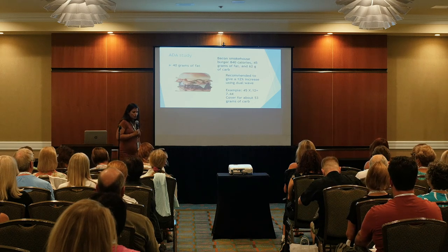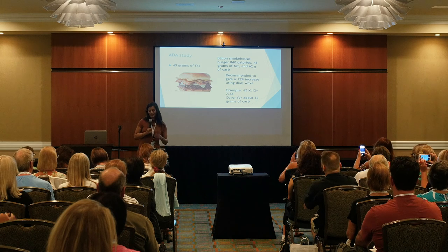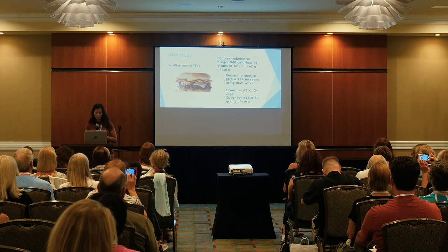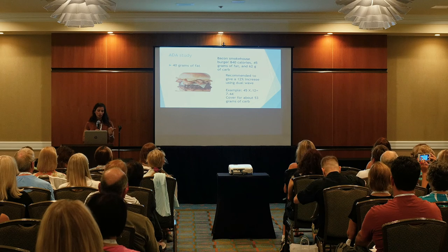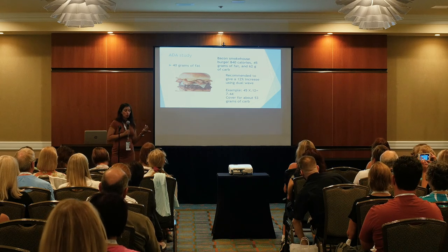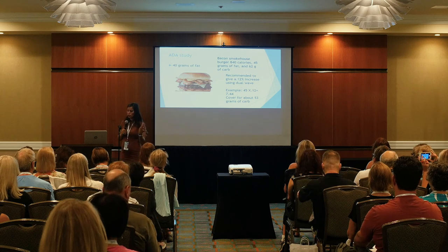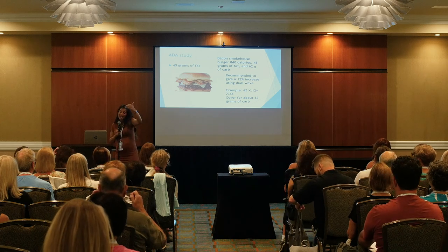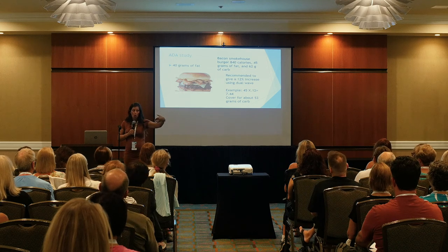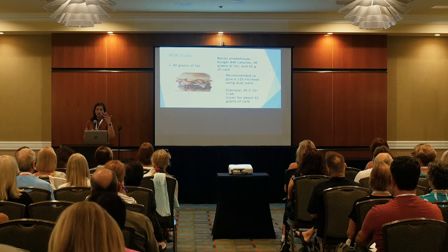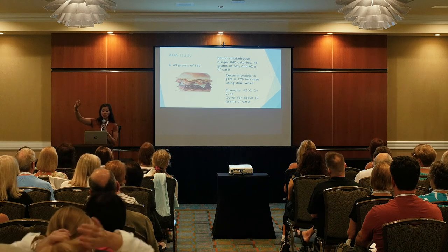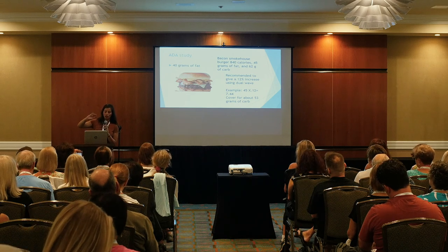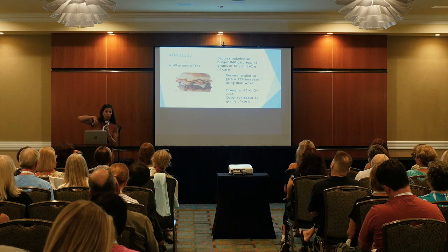For 40 grams of fat — a bacon smokehouse burger with 62 grams of carbs and 45 grams of fat — the recommendation was a 12% increase. So 45 times 0.12 equals 7.44. You add that to 62 grams of carb — so you'd cover for about 69–70 grams of carb total.